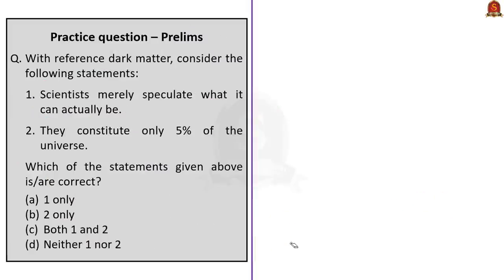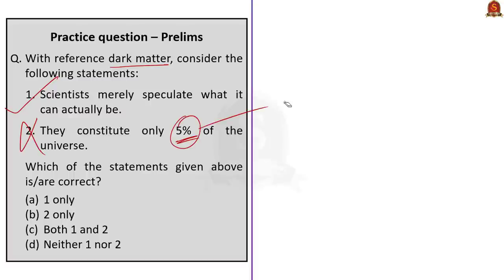The next question is based on dark matter — a two-statement question. Statement 1: Scientists merely speculate what it can actually be. This is correct because scientists are still figuring out what dark matter actually is. Statement 2: Dark matter constitutes only 5% of the universe. This is incorrect because dark matter makes up over 27% of the universe. The question asks for the correct statement, so the correct answer is Option A — Statement 1 only.